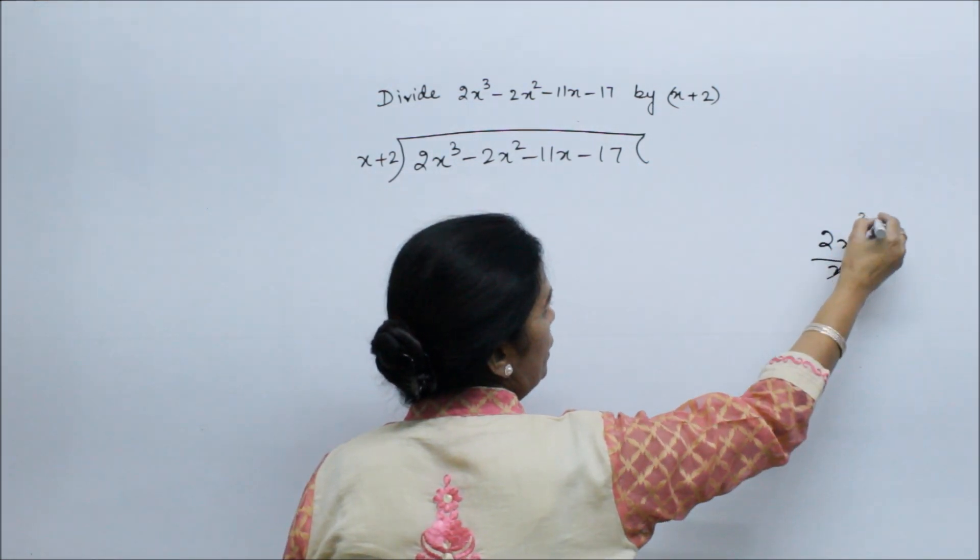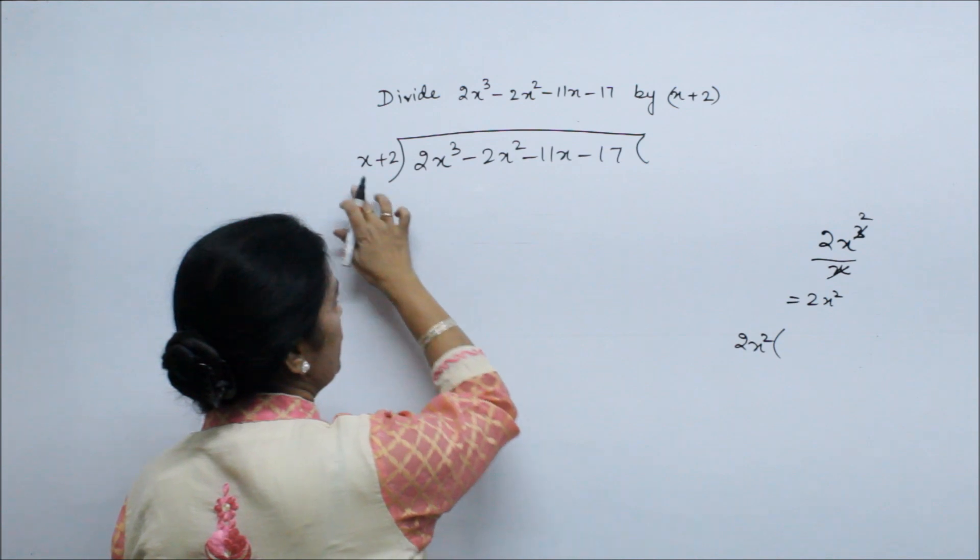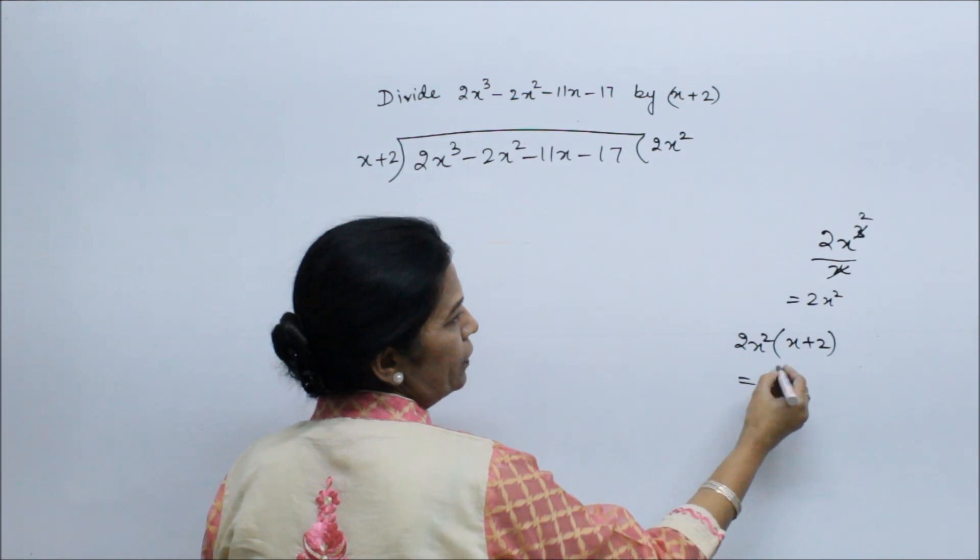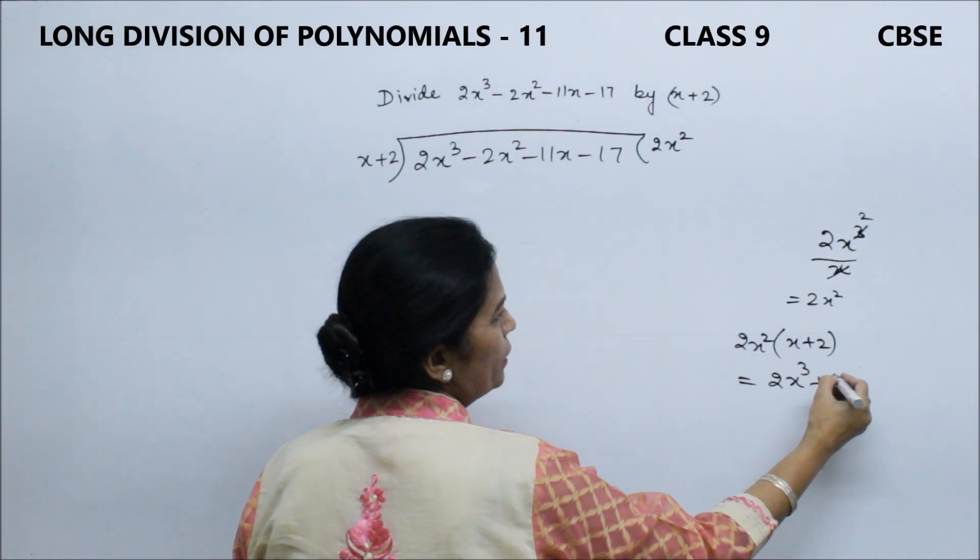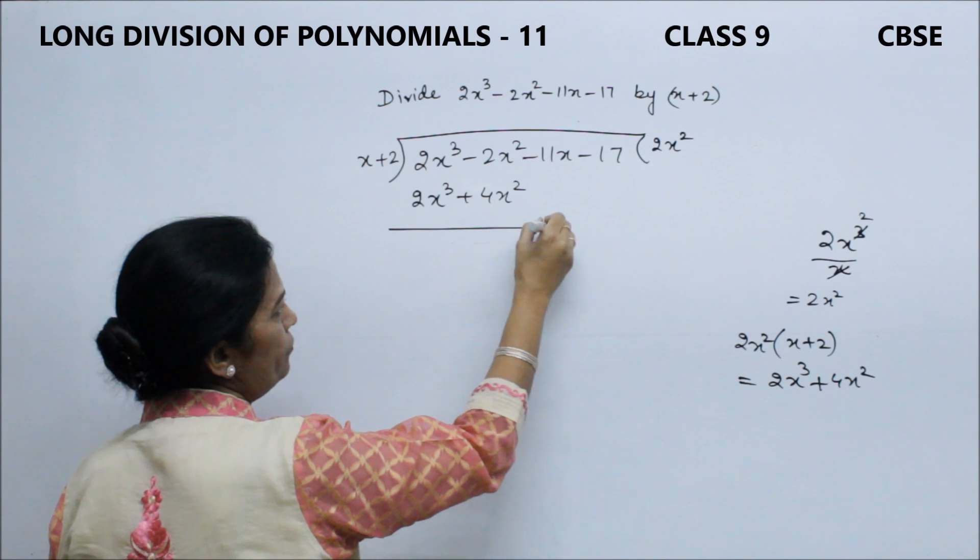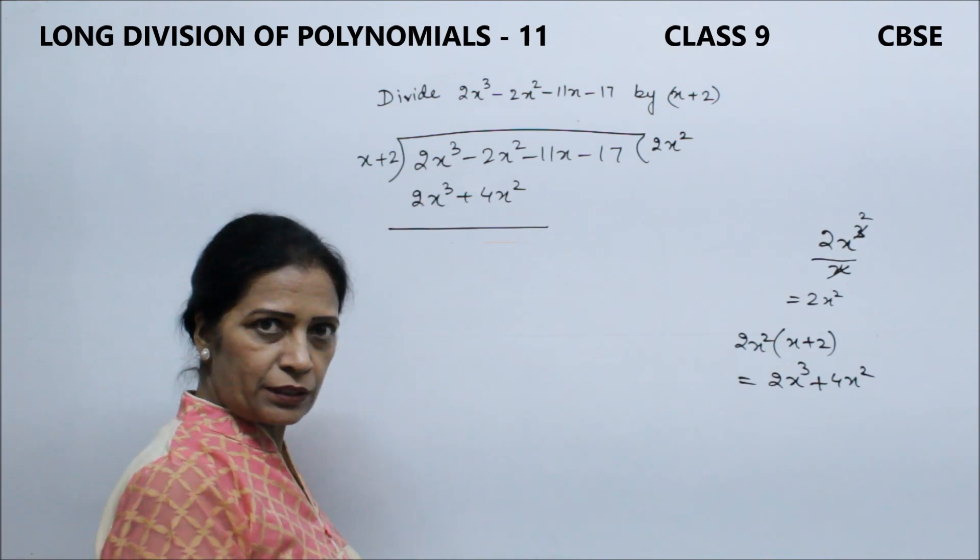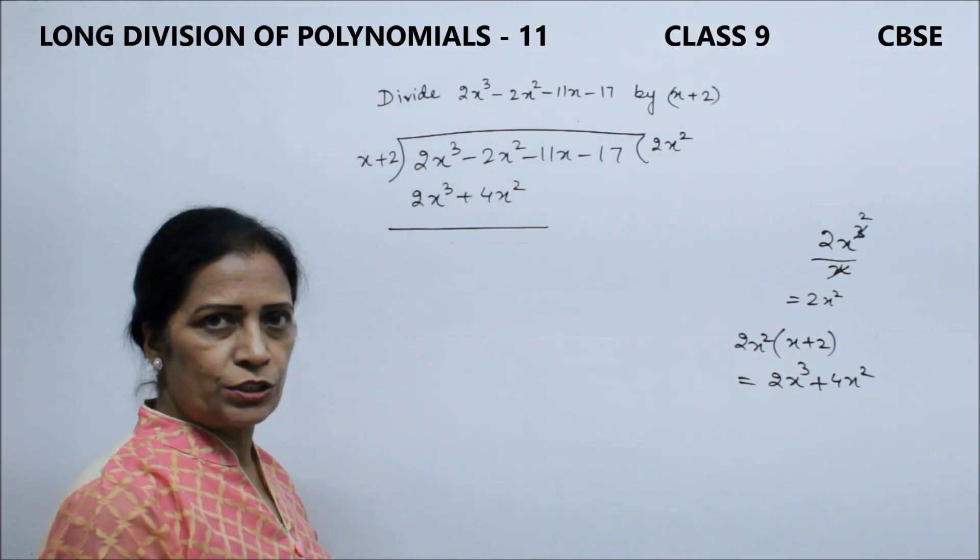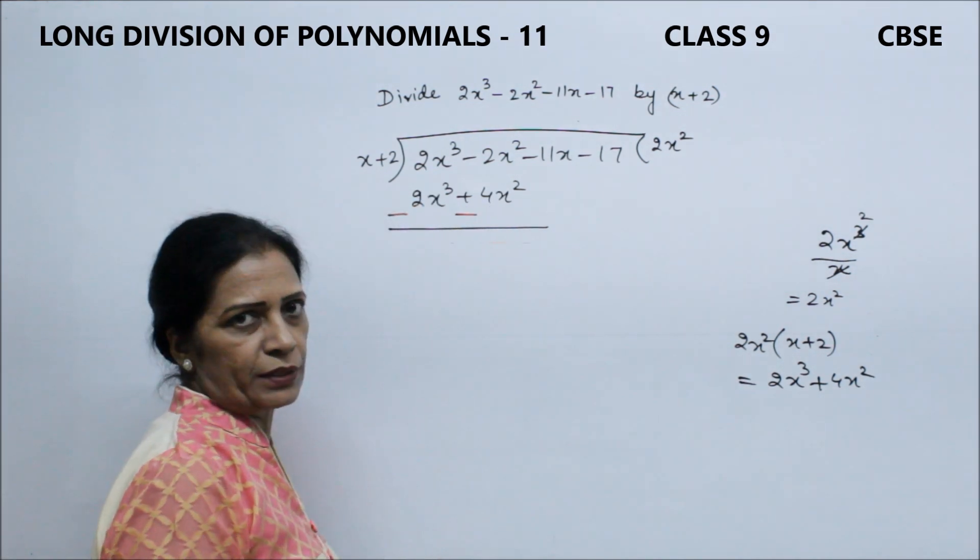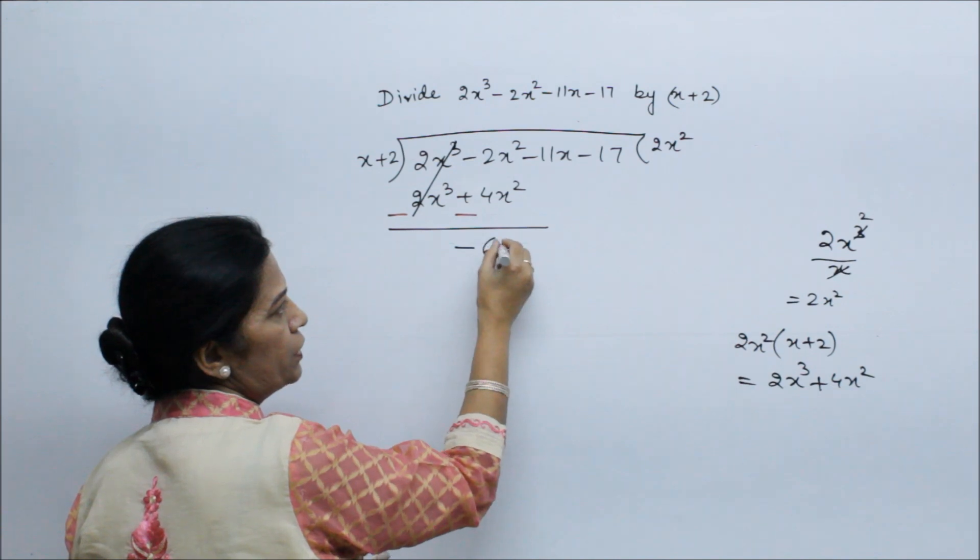This will be 2x². This will multiply x + 2. Here I have 2x². Now multiply it, you can see 2x³ + 4x². Now we will write 2x³ + 4x². As we do in number division, here we will subtract and change the sign: plus then minus, if minus then plus. Now we will cancel. Adding the negatives, we get -6x².